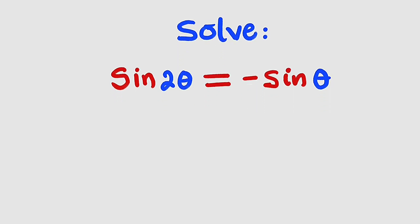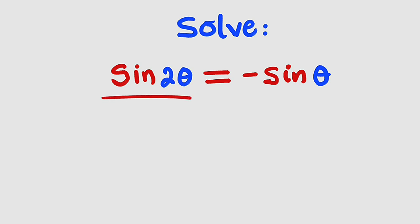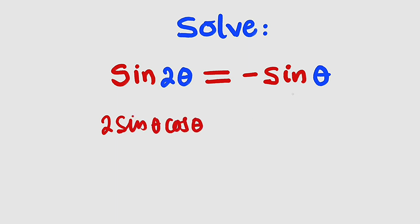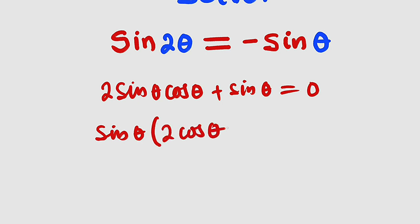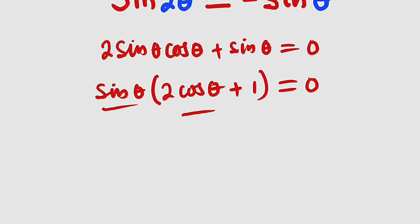From the left hand side you can clearly see this is the double angle identity for sine, which can be written as 2 multiplied by sine θ cos θ. Bring sine θ to the left — it becomes positive sine θ and the whole expression equals zero. By factorization, since we have sine θ in common, we bring it outside: sine θ times (2 cos θ + 1) equals zero.